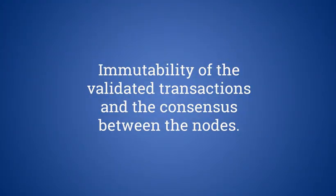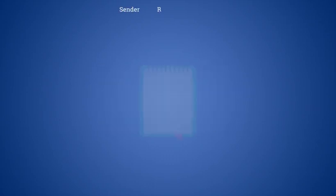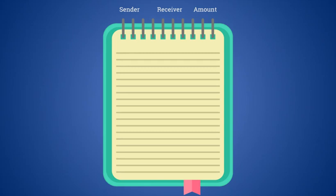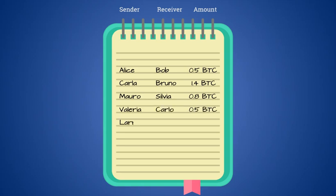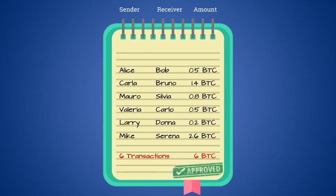Those two results are the unchangeability of recorded transactions and consent across nodes. Let's imagine having a notebook where all the pages are initially empty. On the first page, we begin to write a transaction on each line — for example, Alice sends Bob 0.05 bitcoin. When we get to the end of the page, we determine the total number of transactions recorded and write it down on the last line.